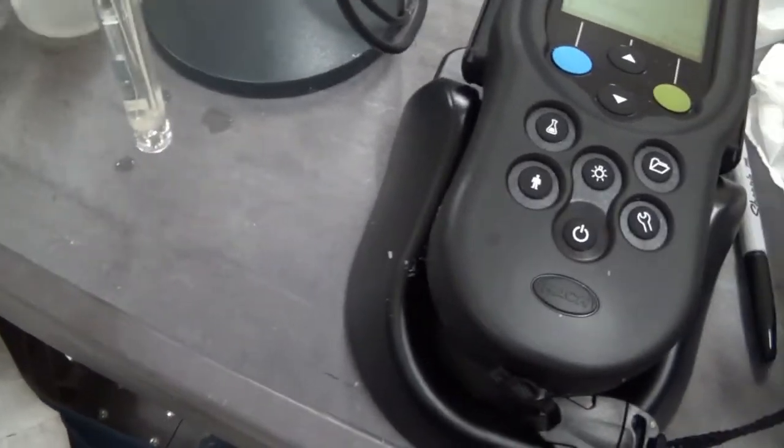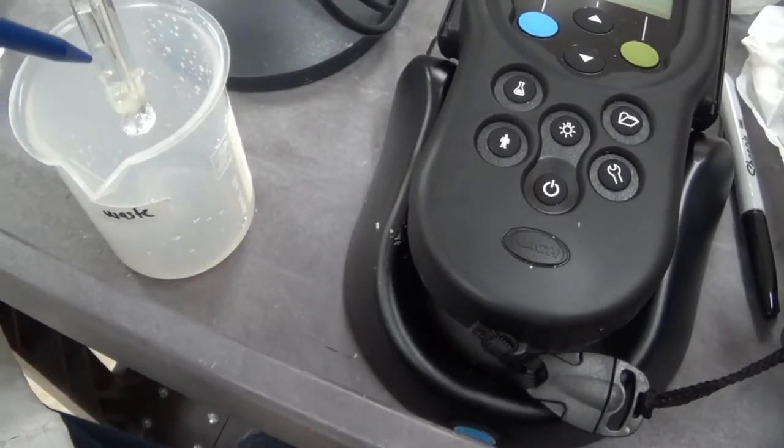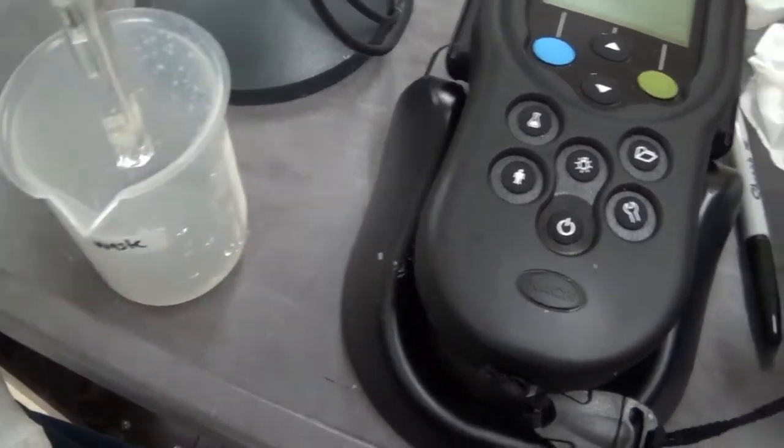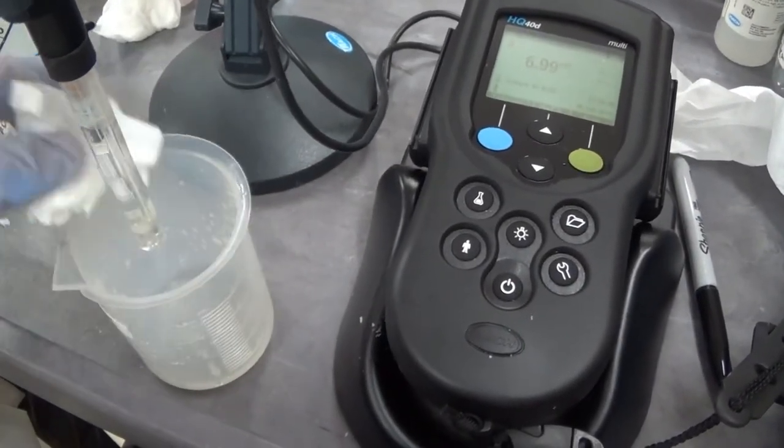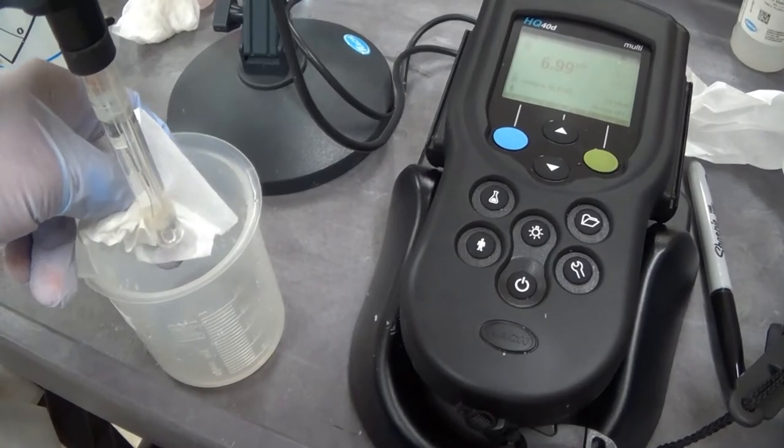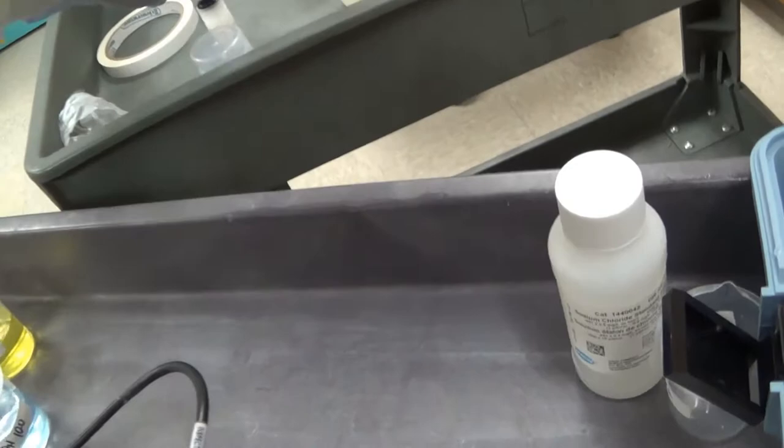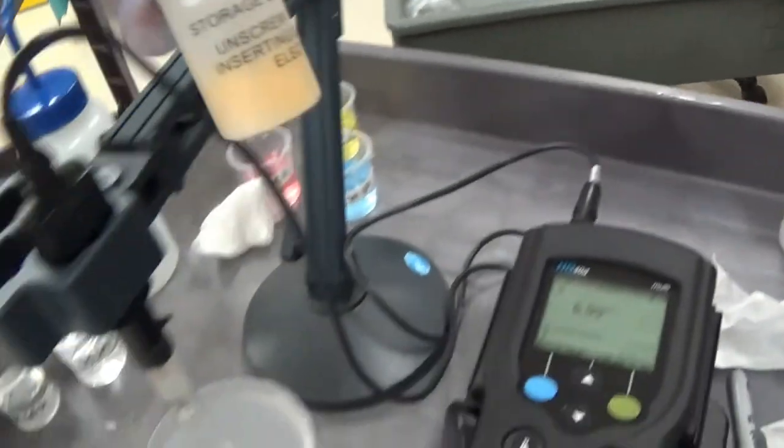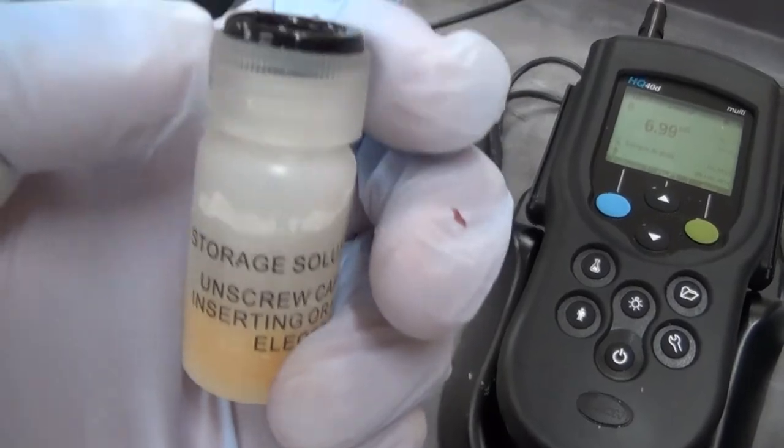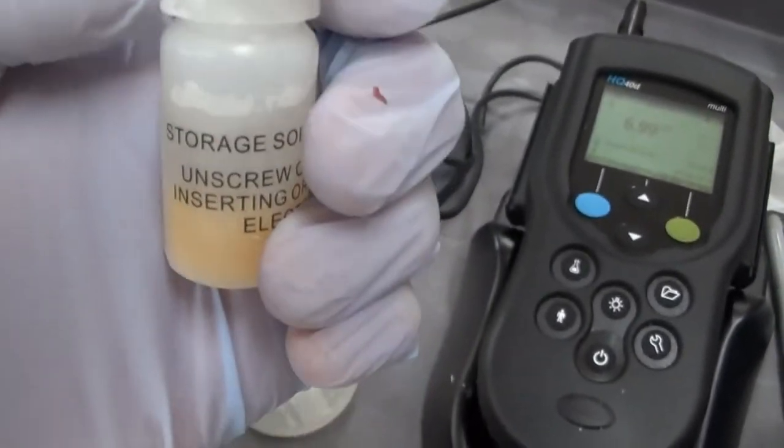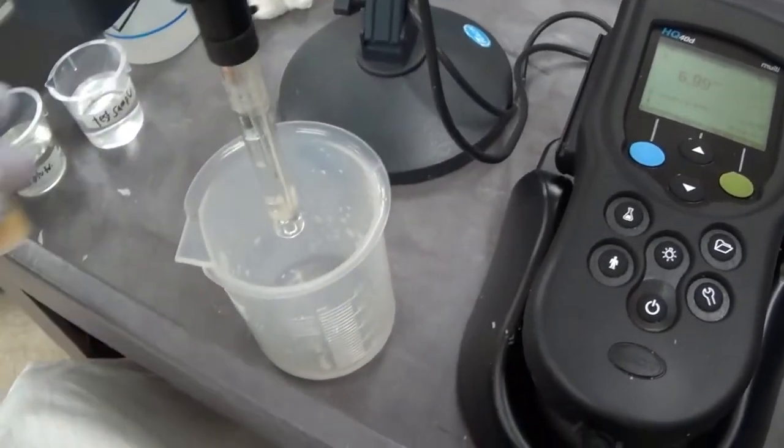I am now going to rinse off the probe, let it dry, and put it back into its little storage container and parafilm it. I am going to loosen this up so it is easy to put it in. Then I will tighten it up and parafilm it. We are done with the pH section.